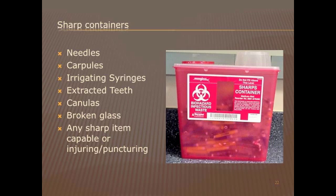What is disposed in the sharp containers? Needles, carpules, irrigating syringes, extracted teeth without amalgam, cannulas, glass tubing, slides, broken glass, broken instrument tips, and any sharp item capable of injuring or puncturing.